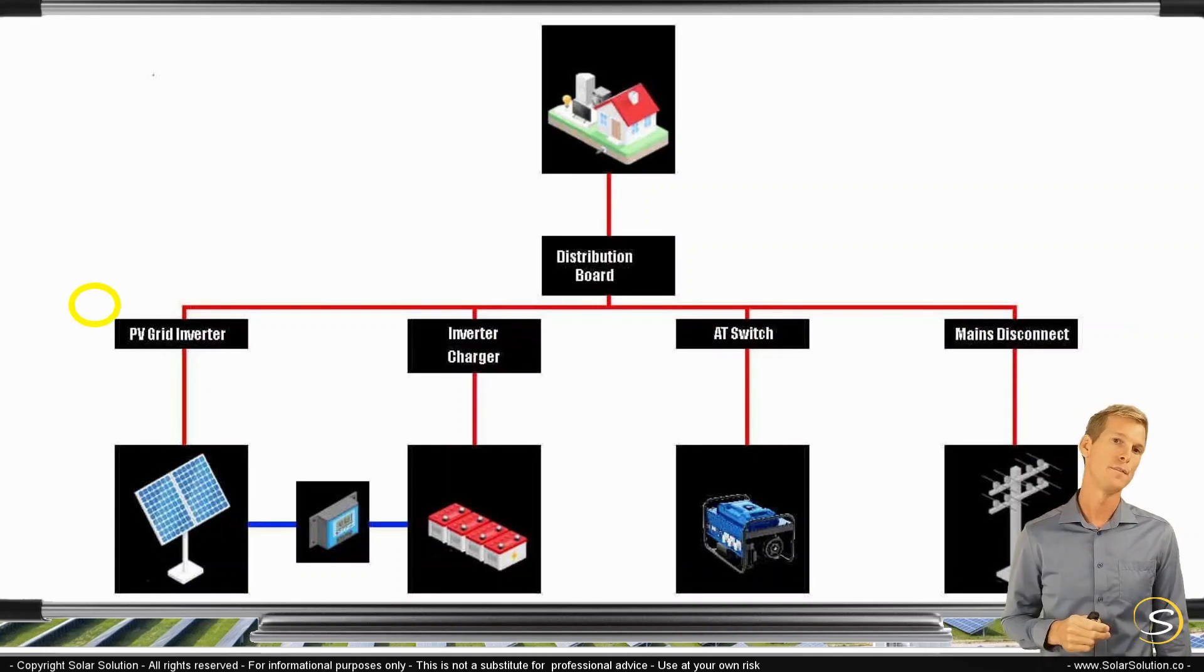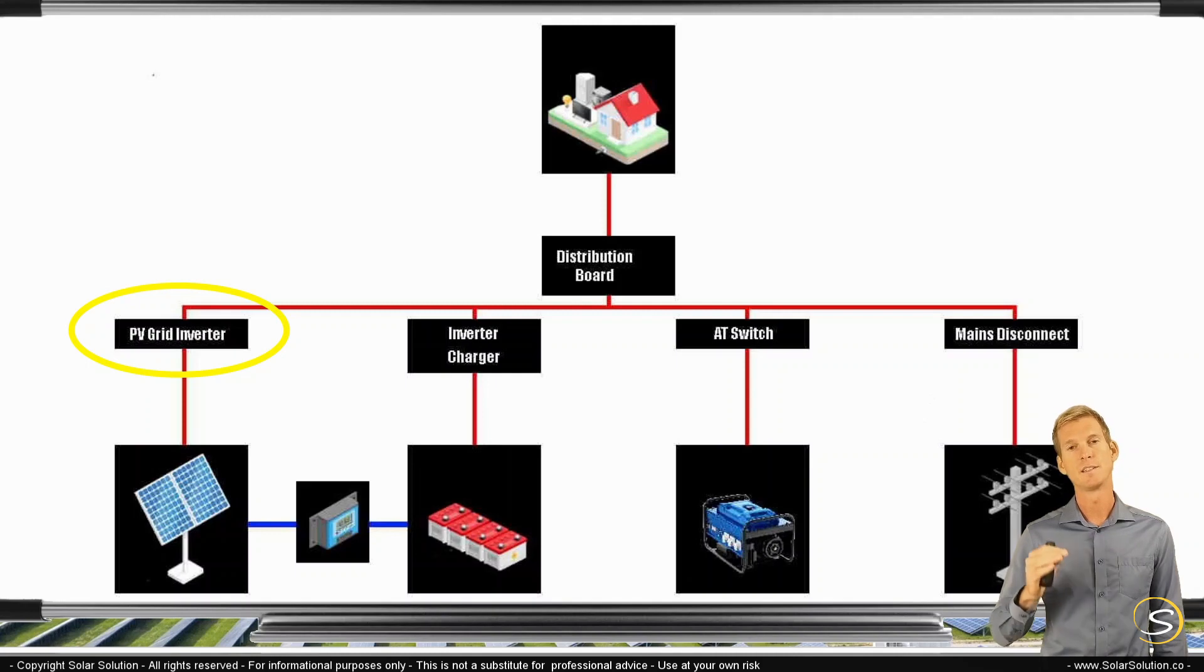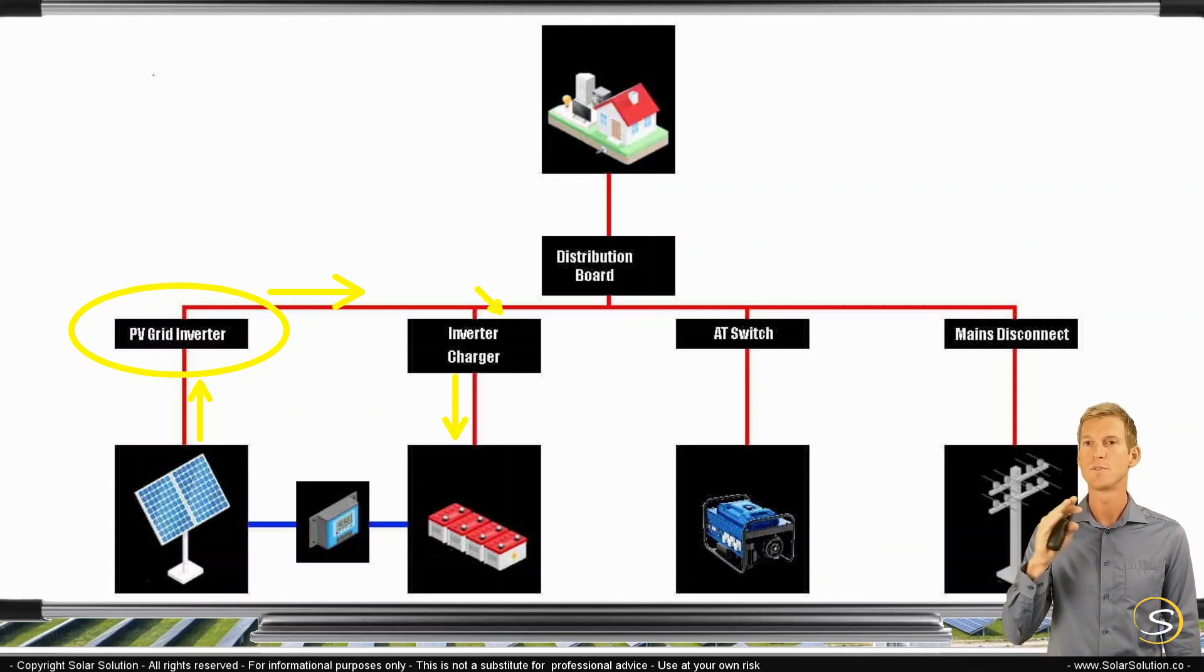The first one is your PV grid inverter. So as explained, the PV grid inverter takes the DC power from your solar panels, it optimizes the amount of power that comes from the solar panels and converts it from DC into AC. Then through your AC local grid, you transport the power towards, for example, your inverter charger, where then the power would be turned into DC. Or the AC would just continue towards your loads or towards the grid. So that's your PV grid inverter.